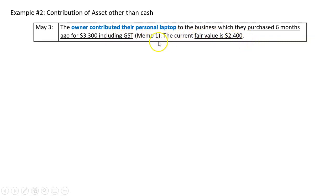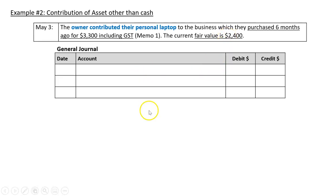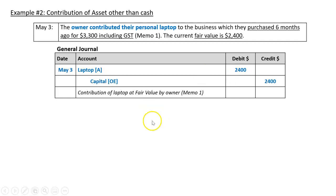So which amount do we use? Well, in our previous video, we said when the owner contributes an asset, we don't use what the owner paid - that's not relevant to today for the business as an entity. We should use the fair value, which is the estimate of the current market value, or basically the economic resources left in the asset. So we're going to use $2,400. We're going to debit laptop and credit capital. The narration will say: contribution of laptop at fair value by owner, memo one.